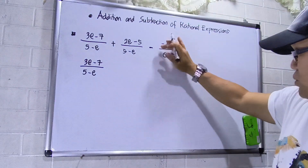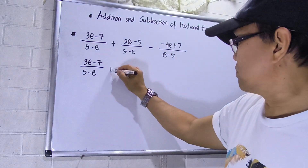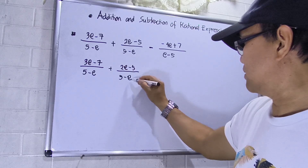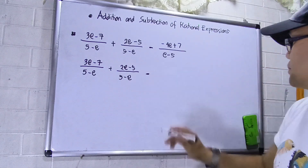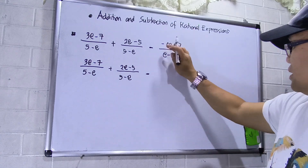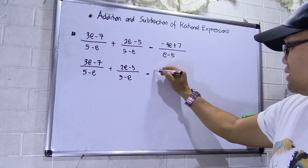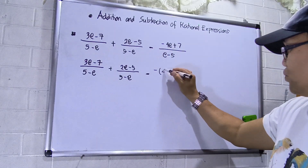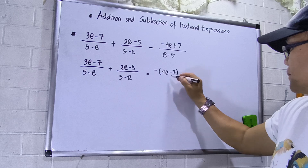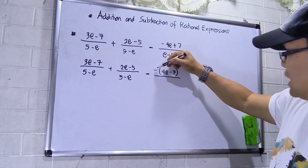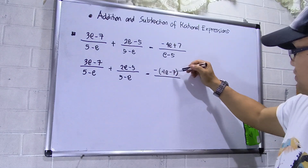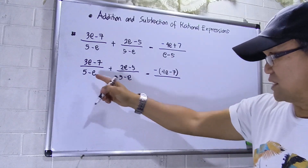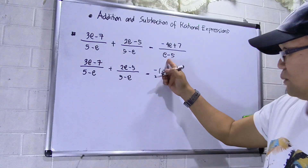We will resolve this to simplify. Plus (2e − 5) over (5 − e), then minus — we need to simplify the negative sign. I will factor out the negative sign using circle brackets: (4e − 7). Check: negative times 4e is −4e, negative times −7 is positive 7.